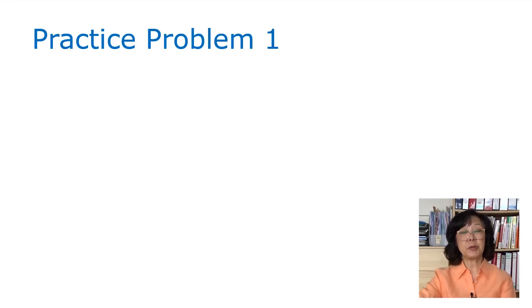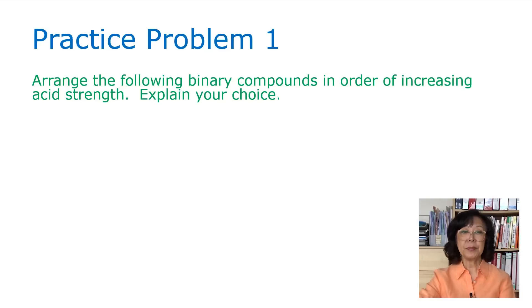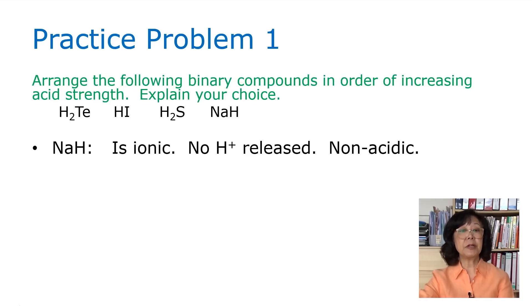Let's try practice problem number one. Arrange the following binary compounds in order of increasing acid strength and explain your choice. Here we have H2Te, hydroiodic acid, hydrosulfuric acid, and sodium hydride. Sodium hydride is ionic. The H carries a negative charge, so there's no H+ released. It is non-acidic.